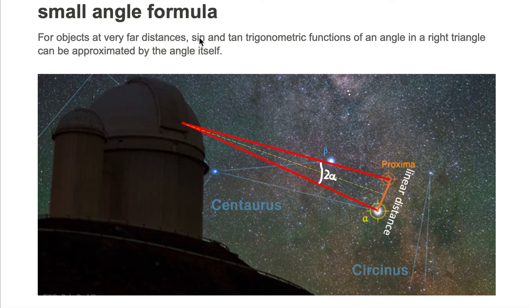The other part says that the sine and tan trigonometric functions of an angle in a right triangle can be approximated by the angle itself. Let's find the right triangle. If you look closely at the dashed yellow line, the orange line, and the red line, you'll see that they make a right triangle.